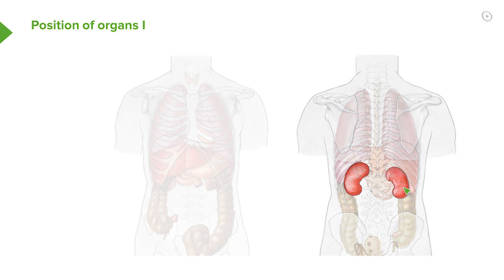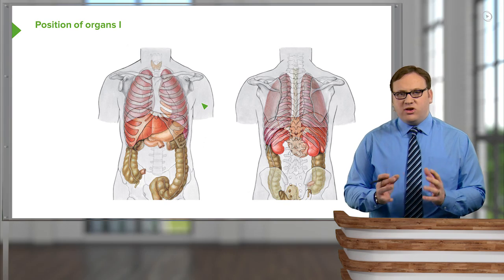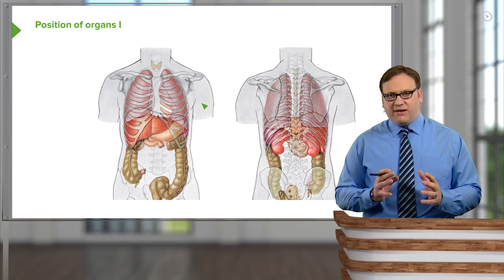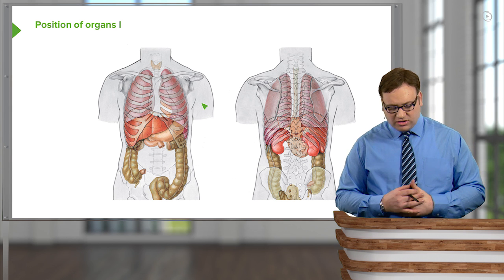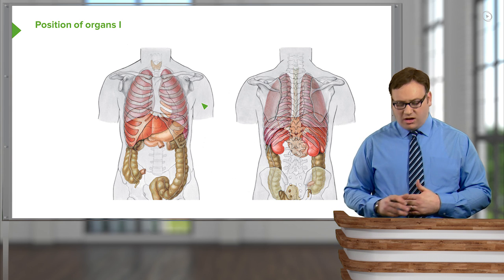This is an anterior view. Over here we have a posterior view, and we can see where the kidneys are located either side of the vertebral column. We can also see, tucked up over here, the spleen, which you can just about make out on this left hand side. We'll look at the various positions of these organs as we go through the course, but this provides a good general overview.